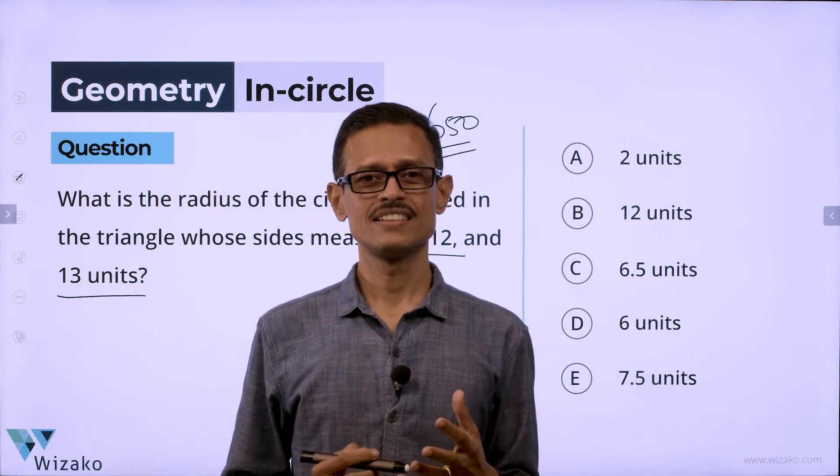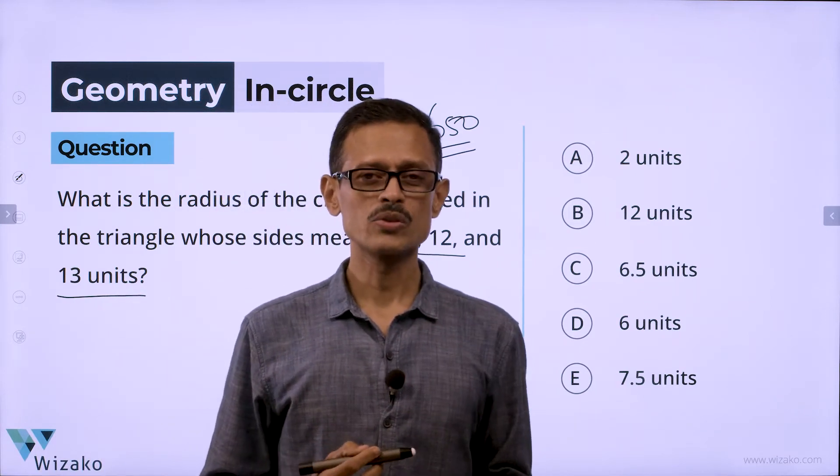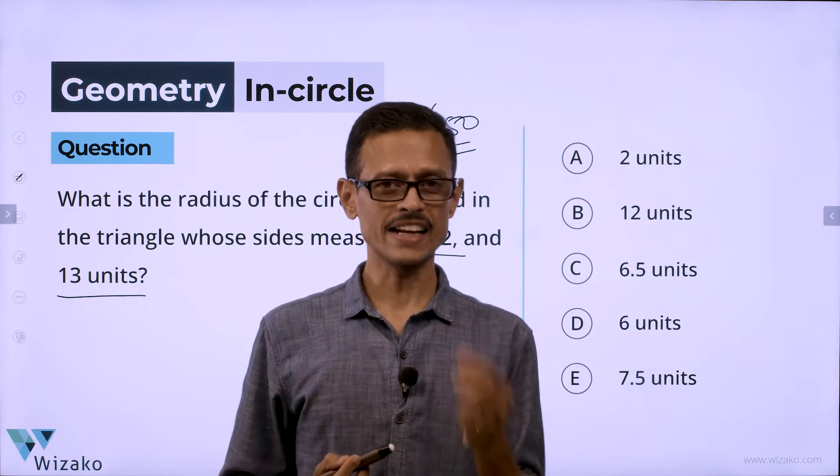Does it ring a bell? Yes — 5, 12, 13 is a Pythagorean triplet. So the triangle we are talking about is a right triangle.